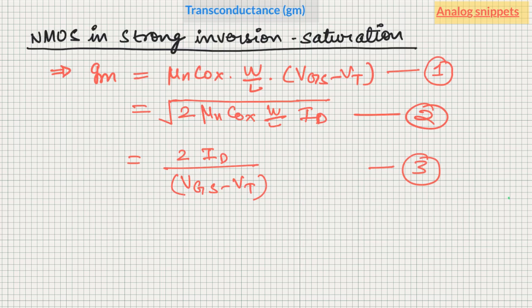Here I have summarized these three equations. In these three equations we have three design parameters: current ID, aspect ratio W/L, and VGS minus VT, and we have one technology parameter μn Cox. These three forms often cause confusion. Especially if you see equation 1 and equation 3, it looks like in equation 1 gm is proportional to VGS minus VT, but in equation 3 it looks like it is inversely proportional to VGS minus VT. Similarly, in equation 2 it is proportional to square root of ID, but in equation 3 it is proportional to ID.